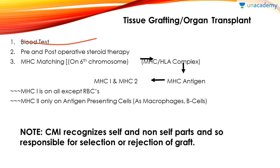In tissue grafting and organ transplantation, we first have a blood test, then pre and post-operative steroid therapy — an immunosuppressive therapy — to suppress the immune system. Then MHC matching, which is major histocompatibility complex matching. This is very, very important because if you don't do this, the graft will be rejected by the cell mediated immune system.